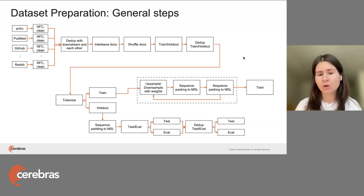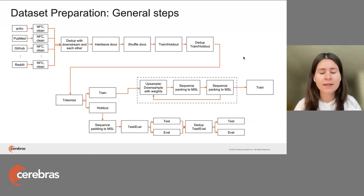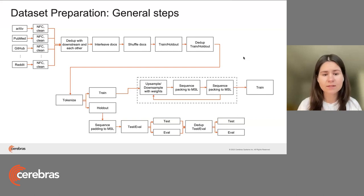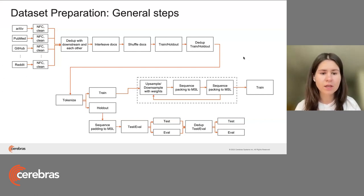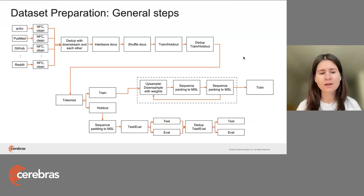Then you want to split into training and holdout. The holdout set is separated to verify model quality — it could be a validation set, or validation and test set. Since we may have introduced weights when interleaving and upsampling, we might end up with intersection between train and holdout. You want to de-duplicate that. This task is much easier because usually the holdout set can fit into memory.